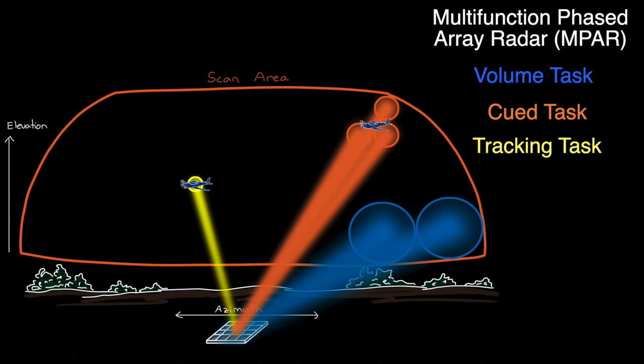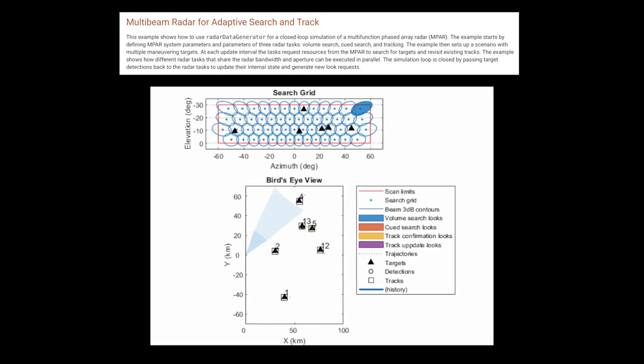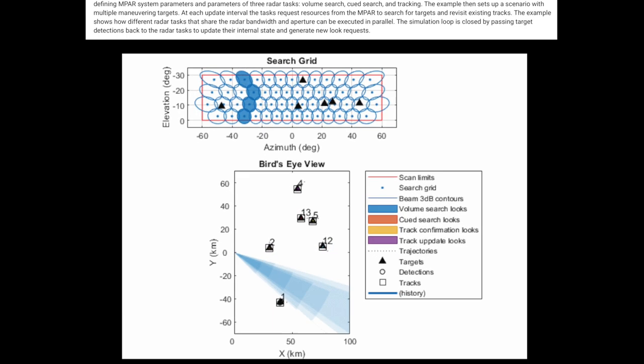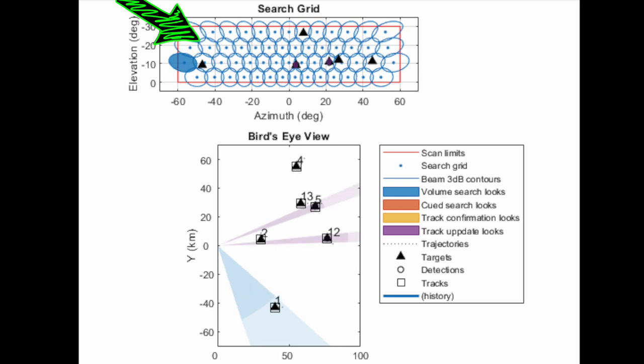Now my drawings can't really get across how cool and complex multi-function radar can be, so instead let me show you this much better animation. This comes from a MATLAB example on multi-beam radar which I've linked to below. Up at the top is the range of elevation and azimuth angles that the radar is scanning within, and it's doing it by breaking up the area into a grid of these blue circles, and then dwelling at each of those grid points to see if a detection is made. Each filled in blue circle is where the volume search task is currently looking, and you can see how that moves across the scan area to search for new targets.